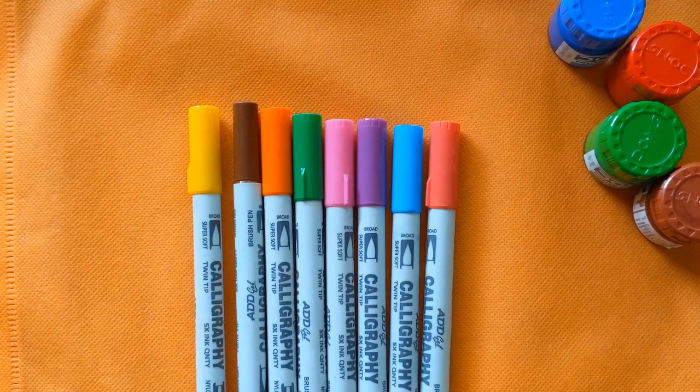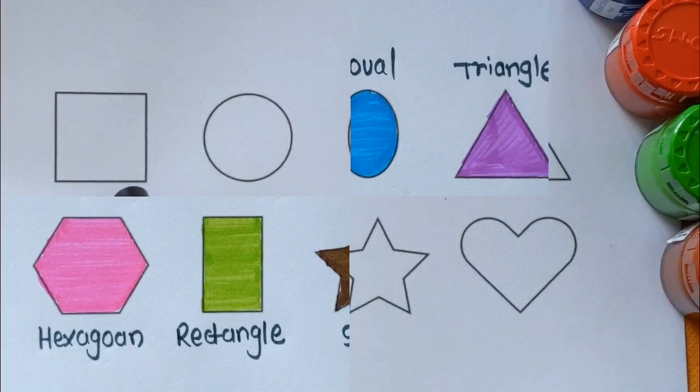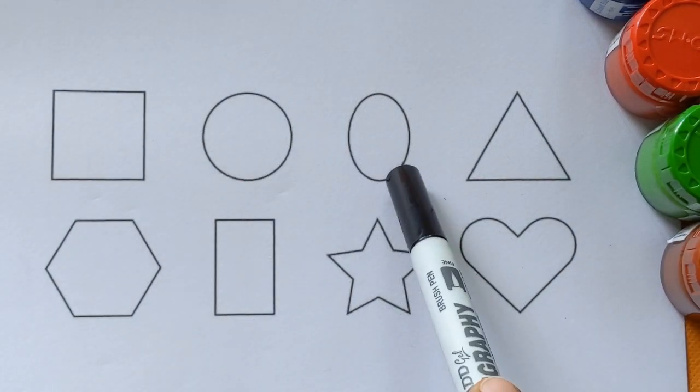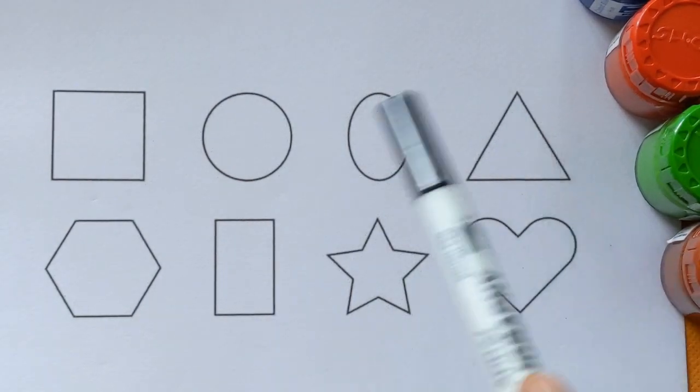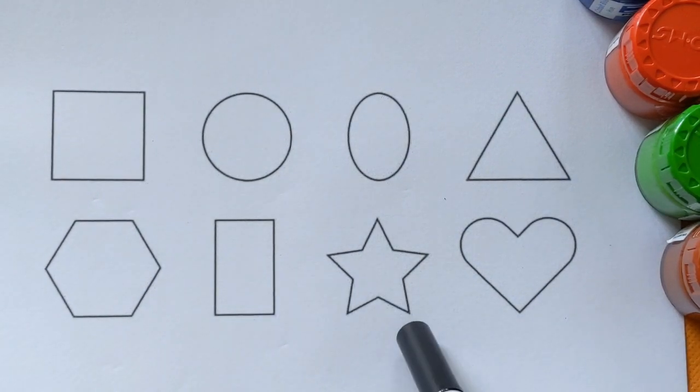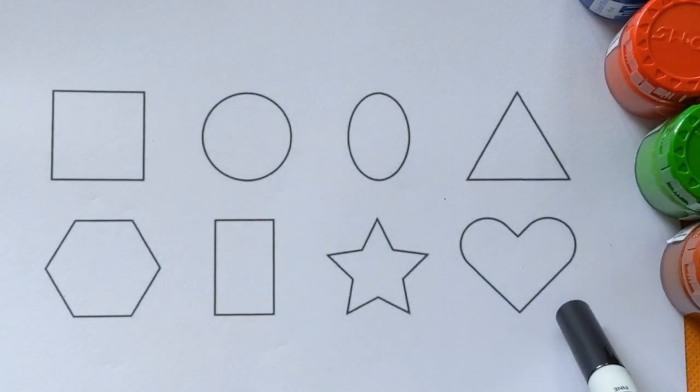Yellow color and black color. This is square, circle shape, oval, triangle. This is hexagon, rectangle, star shape, and this is heart.